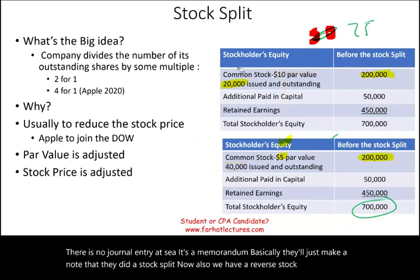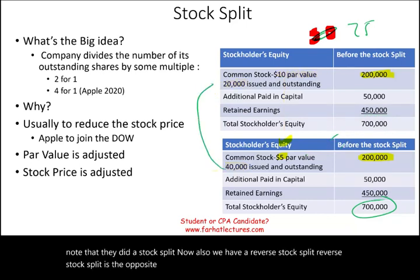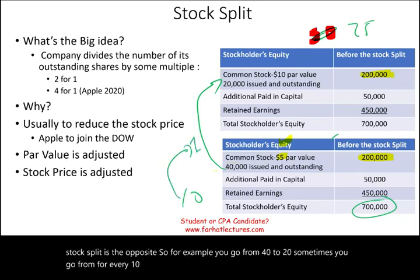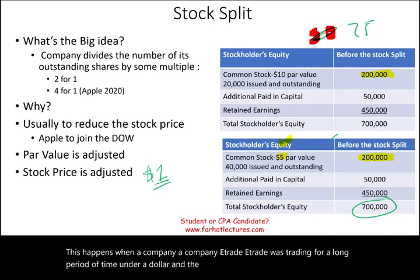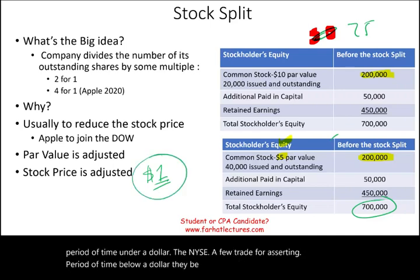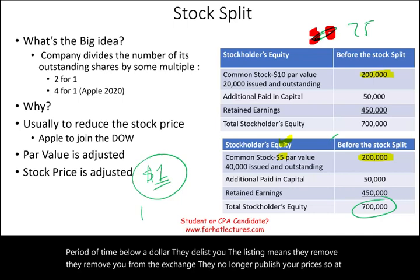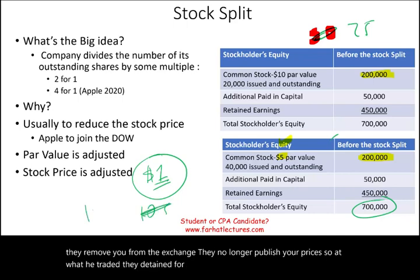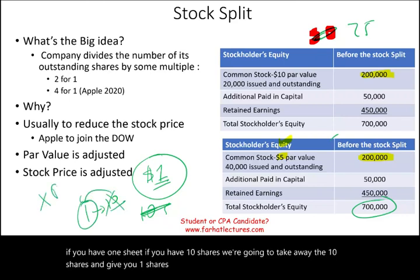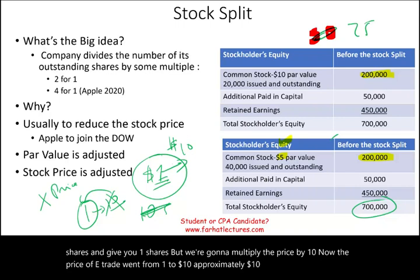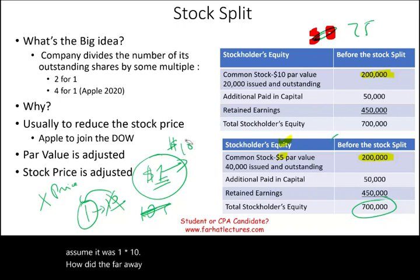We also have a reverse stock split, which is the opposite. For example, for every 10 shares, they give you one share and the stock price goes up. This happens when a company, like E-Trade, trades for a long period of time under a dollar. The NYSE will delist you — remove you from the exchange and no longer publish your prices — if you trade below a dollar for a certain period. So E-Trade did a 1-for-10 reverse split: they took away 10 shares and gave you 1 share, but multiplied the price by 10. The price of E-Trade went from approximately $1 to $10. From an accounting perspective, we don't need to worry about a reverse stock split either.